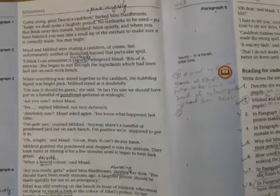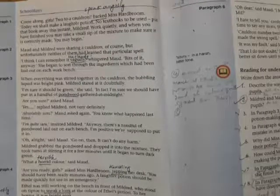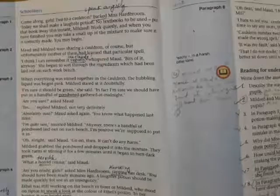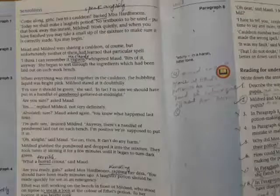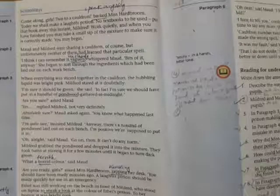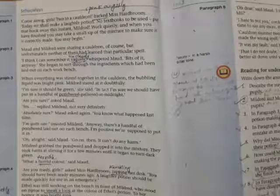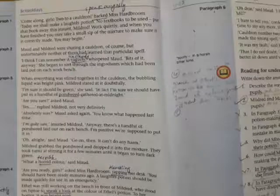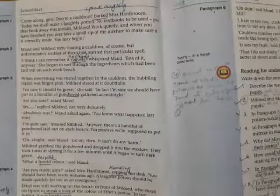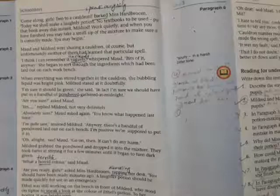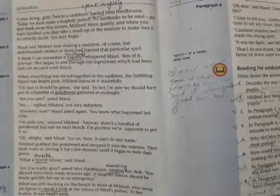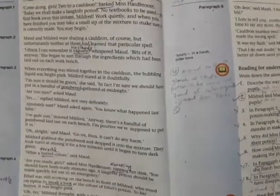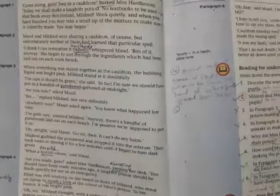In paragraph two, Maud and Mildred were sharing a cauldron, but unfortunately neither of them had learned that particular spell. 'I think I can remember it vaguely,' whispered Maud. When everything was stirred together in the cauldron, the bubbling liquid was bright pink. Mildred stared at it doubtfully. 'I'm sure it should be green,' she said. 'In fact I am sure we should have put in a handful of pondweed gathered at midnight.' Pondweed is actually a kind of weed which grows in the ponds.